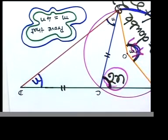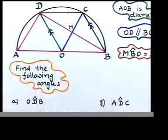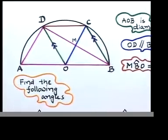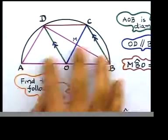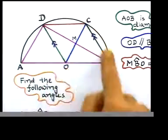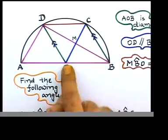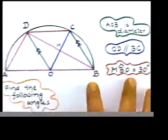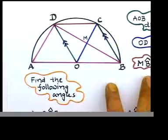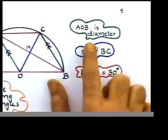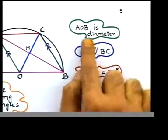Now we move to page five — it's a lovely, beautiful question based on a semi-circle, not a full circle. The center is given. They told us in this question that AOB is a diameter.